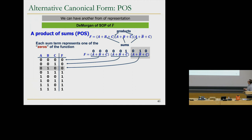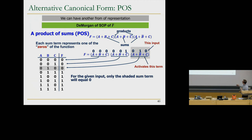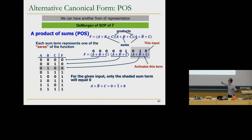These sum terms are called max terms — as opposed to the min terms we discussed earlier. Anything ANDed with zero gives zero, so that's how the output evaluates to zero. For example, the max term A+B-bar+C is activated — evaluates to zero — when inputs are 0, 1, 0. If the input is 0, 1, 0: this max term evaluates to zero while the others evaluate to one, and ANDing them gives zero at the output.